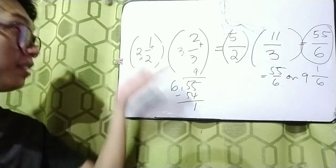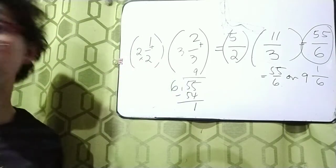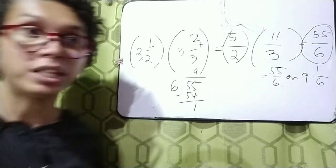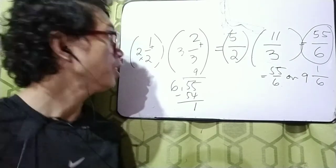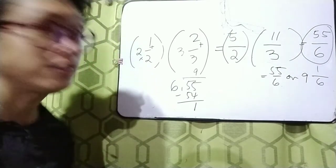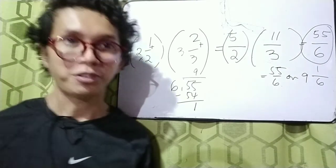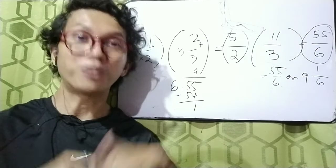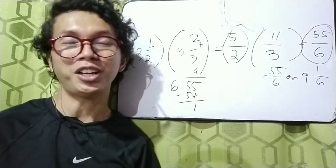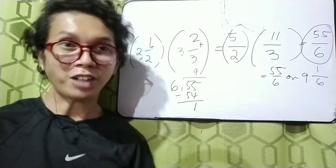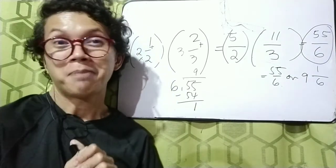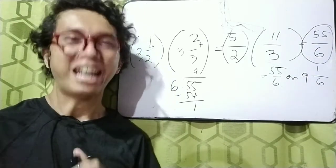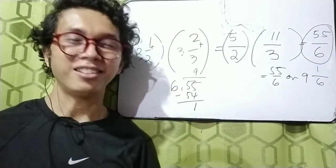So 2 and a half times 3 and 2 thirds equals 9 and 1 over 6. That's all for multiplication of fractions. Bye-bye and have a nice day! Love lots.